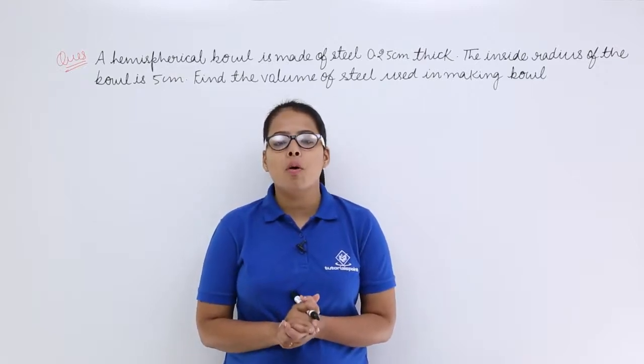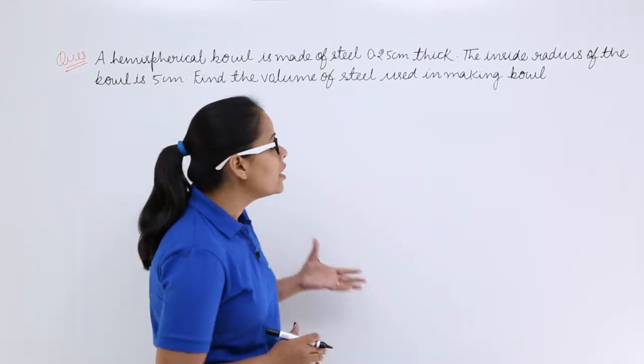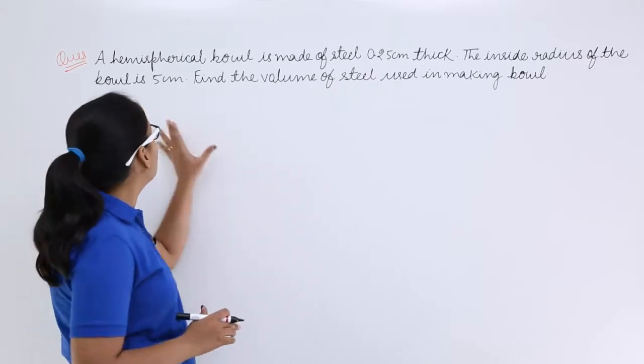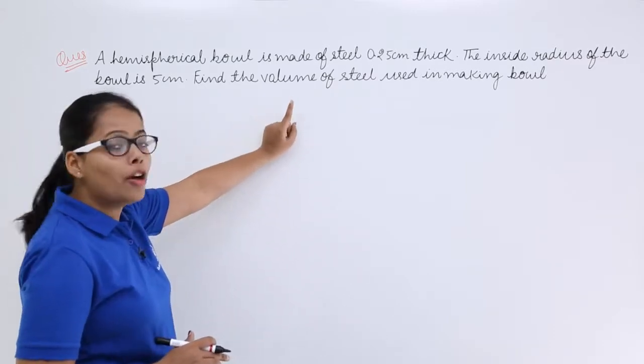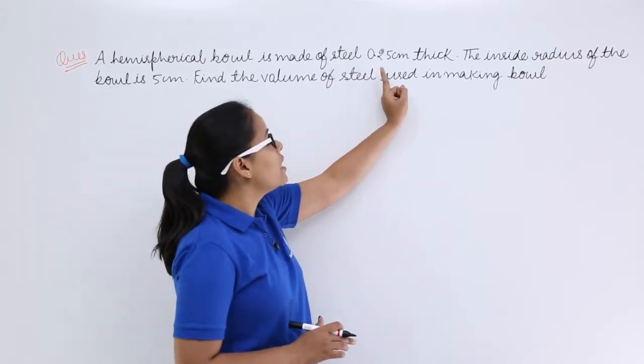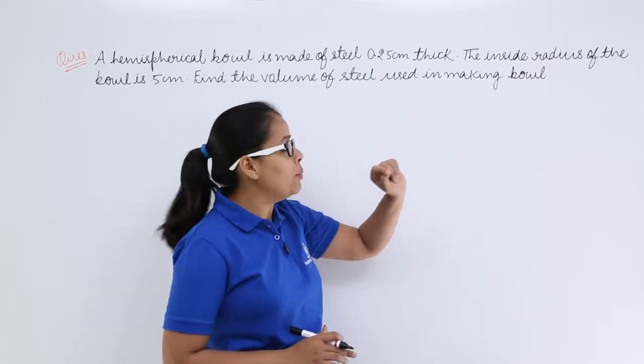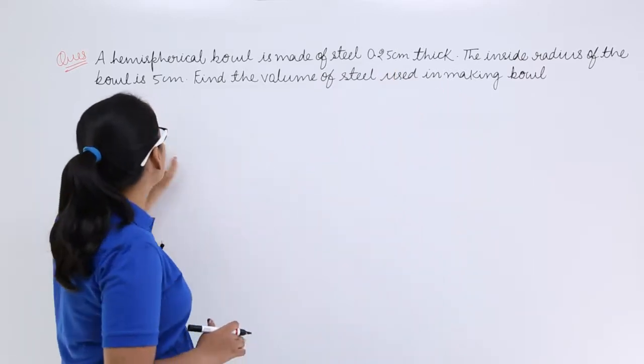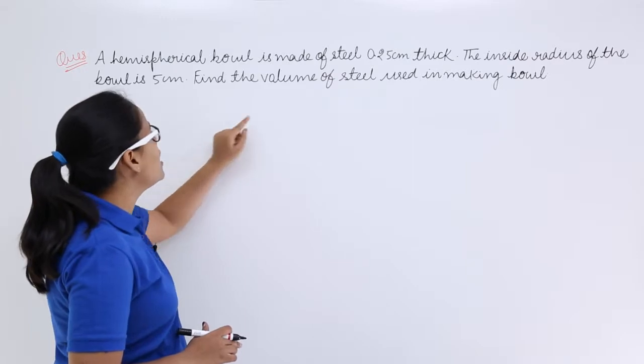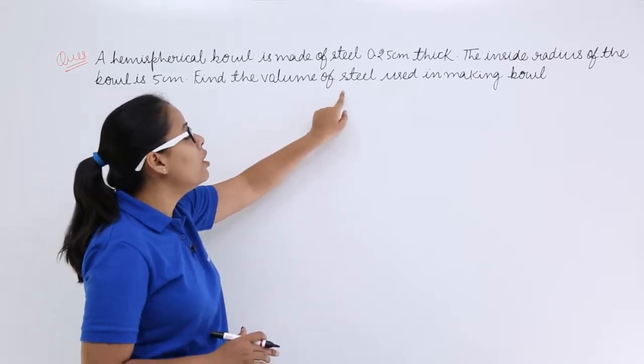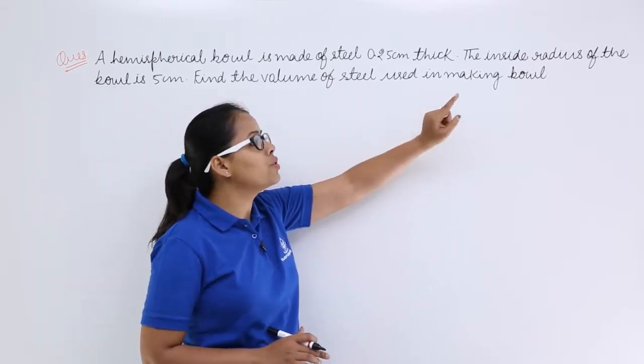Hey guys, let's understand this problem on the volume of sphere. This problem says a hemispherical bowl is made of steel with thickness 0.25 cm. The inside radius of the bowl is 5 cm, and we need to find the volume of steel used in making the bowl.